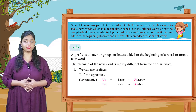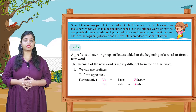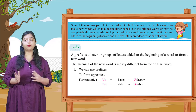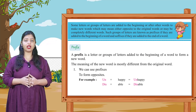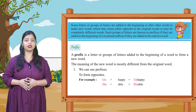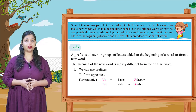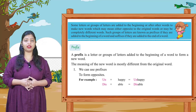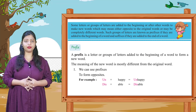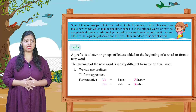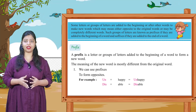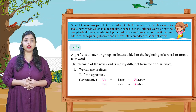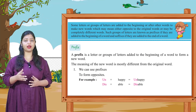We can use prefixes to form opposites. Hum prefixes use karte hain opposites banane ke liye. Examples: un + happy = unhappy, dis + able = disable. Happy yaane ki khush aur able yaane ki kisi cheez ko karne ki ability. Agar hum 'un' aur 'dis' pehle prefix lagate hain, toh happy ka opposite ho jaata hai unhappy, aur able ka opposite ho jaata hai disable. Toh 'un' aur 'dis' yeh aapke prefix hain.